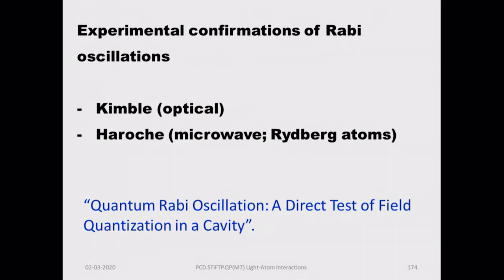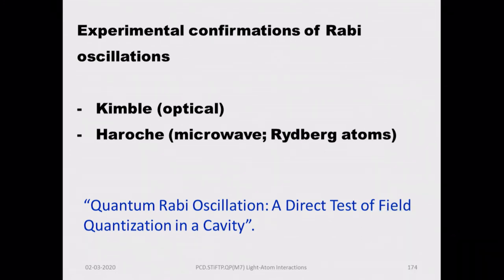Many experimental confirmations have been achieved. Harosh's experiments were in the microwave region, working with Rydberg atoms — those with high principal quantum number. In the optical domain, there are experiments by Kimball's group demonstrating quantum Rabi oscillations in a cavity, which is a direct test of field quantization in a cavity.